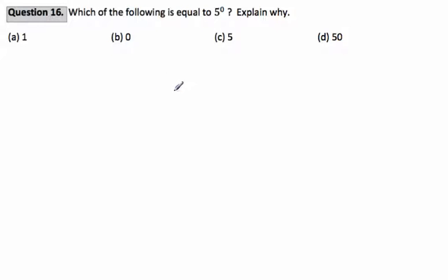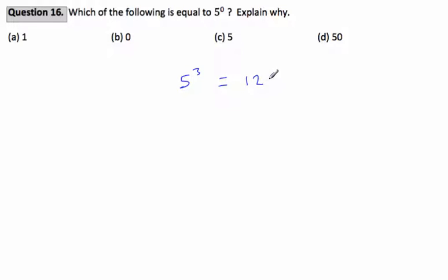Let's look at 5 to the power of 0. Before we look at that, I want to look at some other ones we might know the answer to, such as 5 to the power of 3. Now, 5 to the power of 3 is equal to 5 by itself 3 times. That is 5 by 5, which is 25, by 5 again, which is 125. You can check this in your calculator.